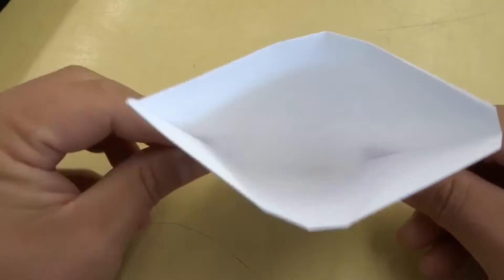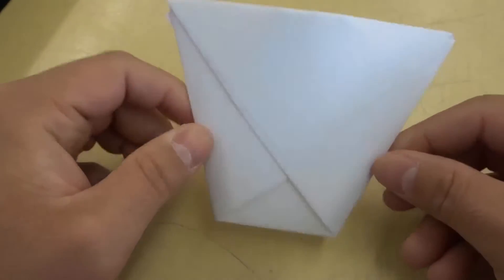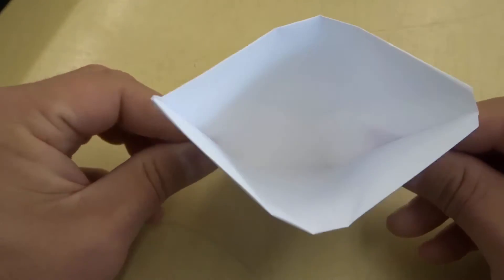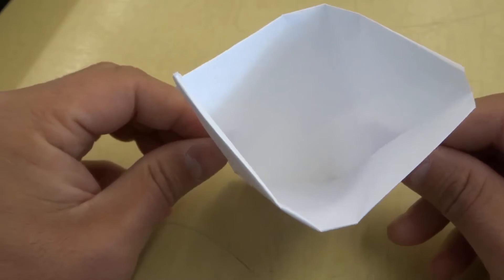This is what the paper cup will look like when you're done. As you can see it looks like a cup and it has this opening here so you can put water or juice or whatever else you want in it.